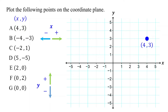Let's plot point B. The x-coordinate is negative 4, so we start at the origin and move to the left 4 units. The y-coordinate is negative 3, so we move down 3 units. Finally, we mark the point where we end up. This is the point (-4, -3).